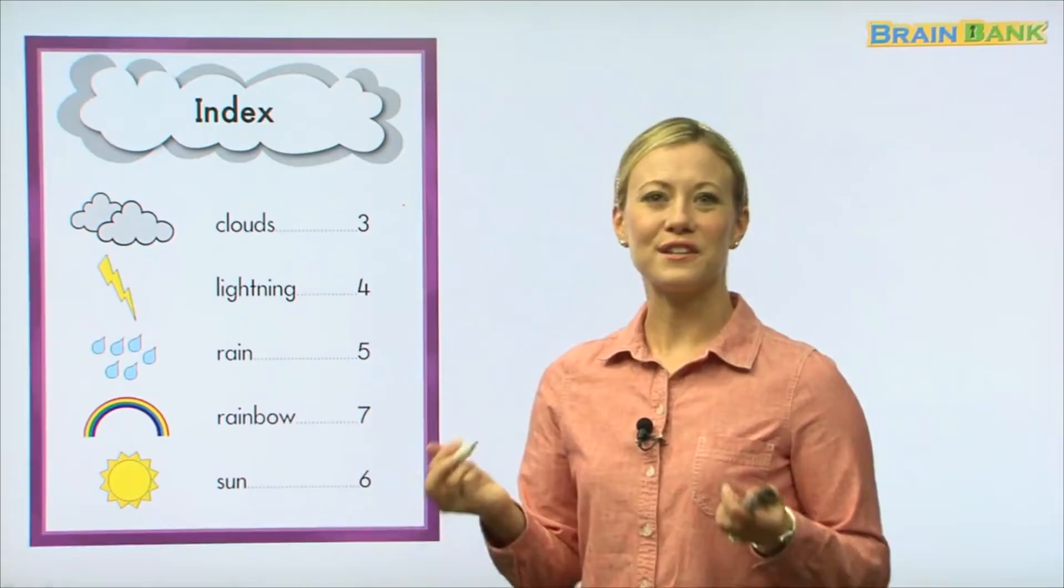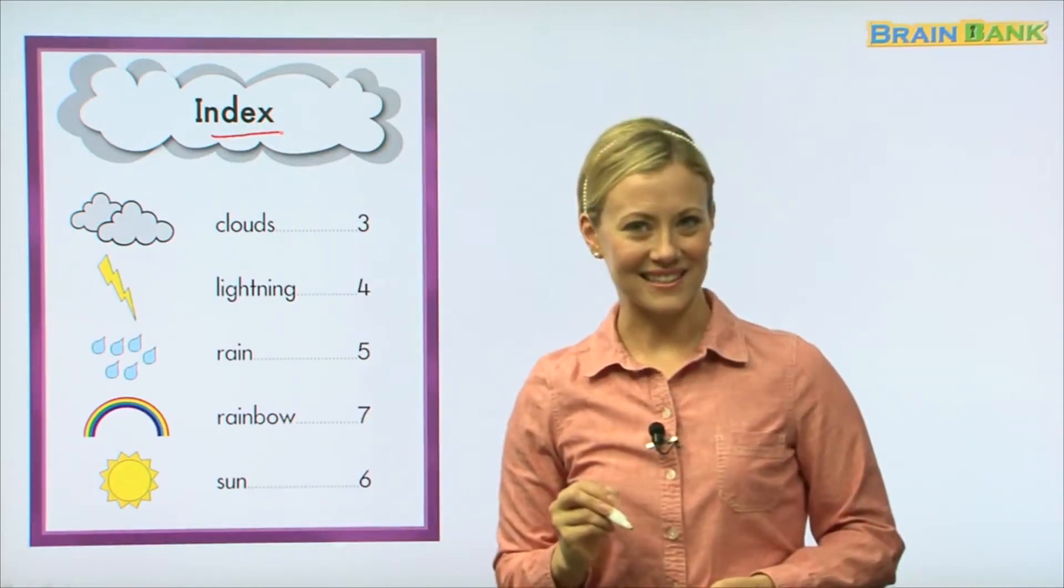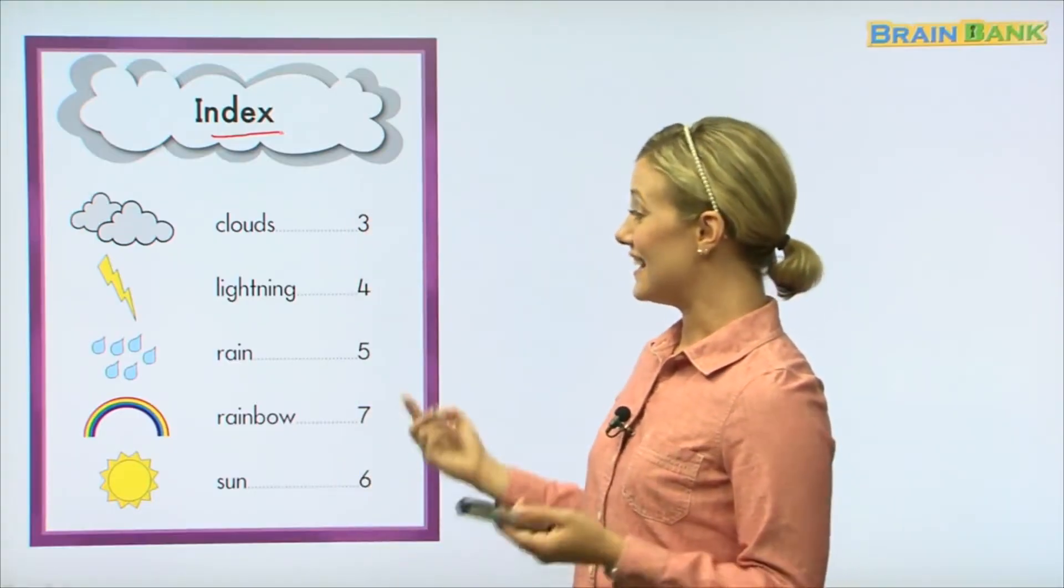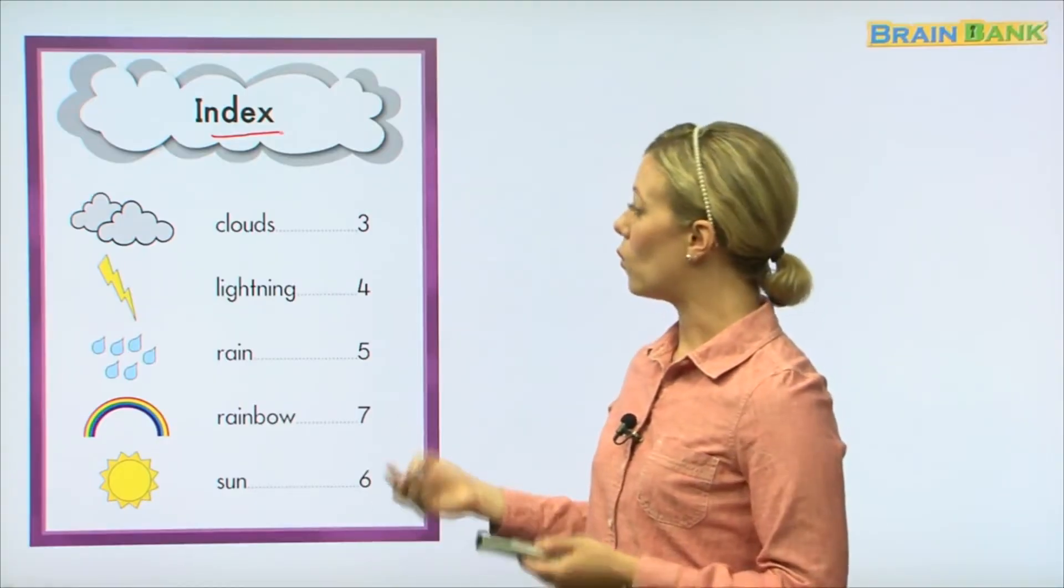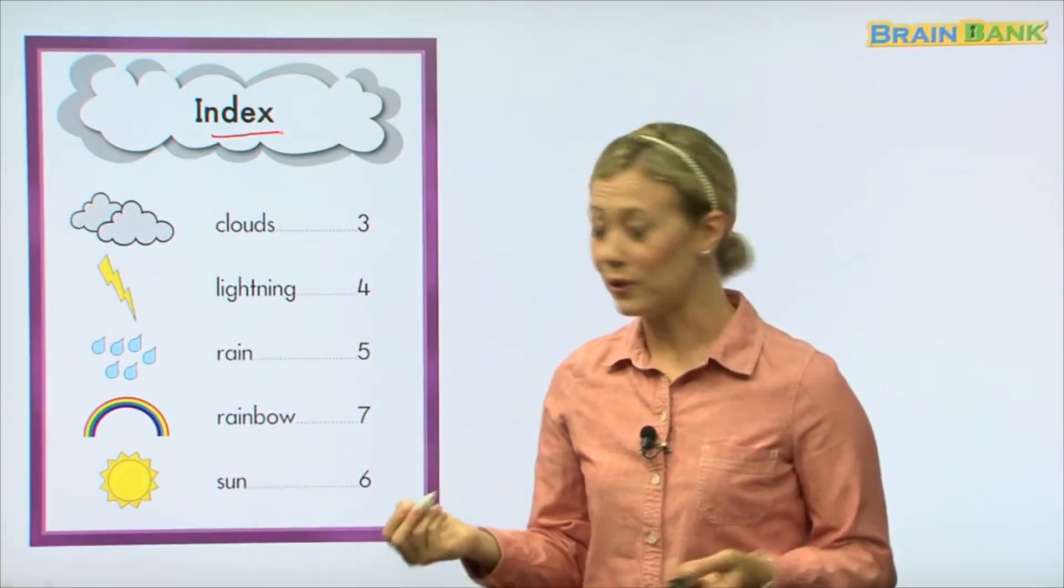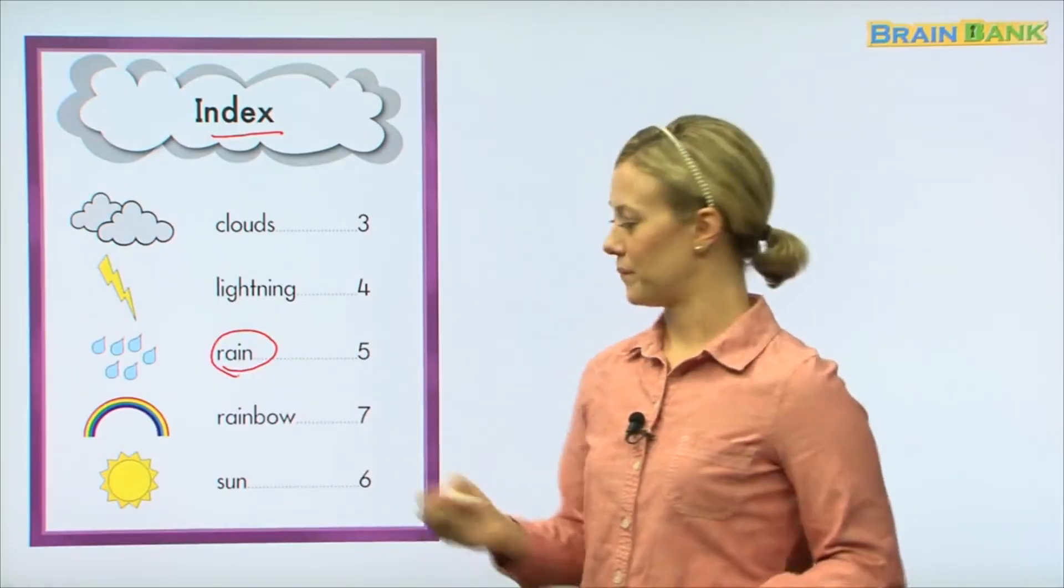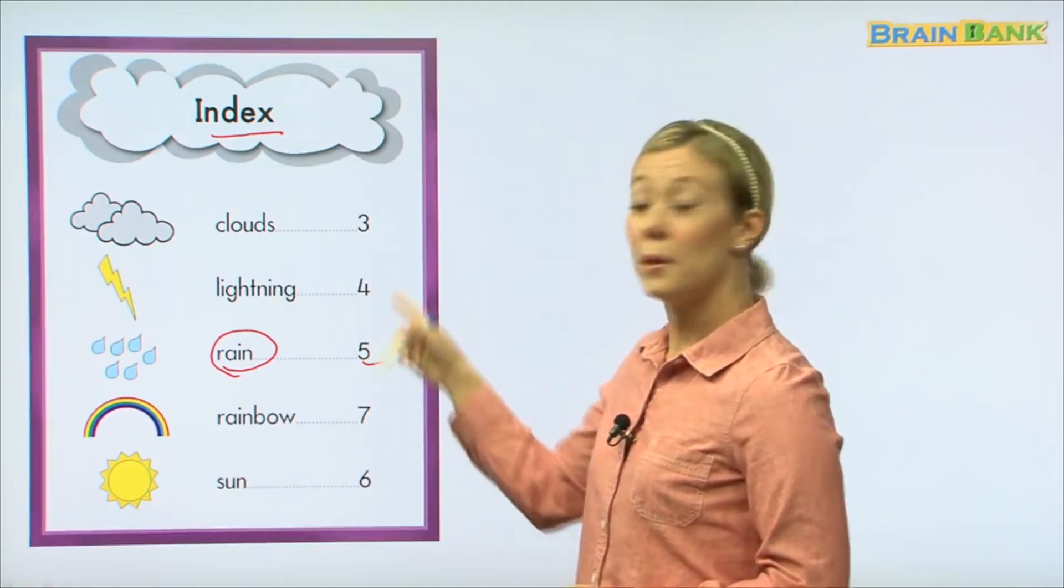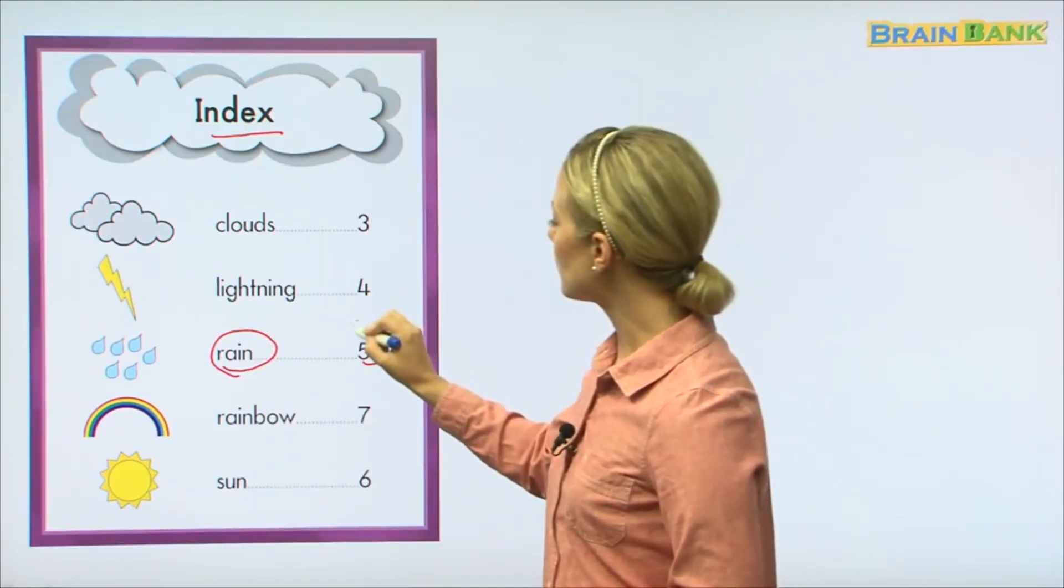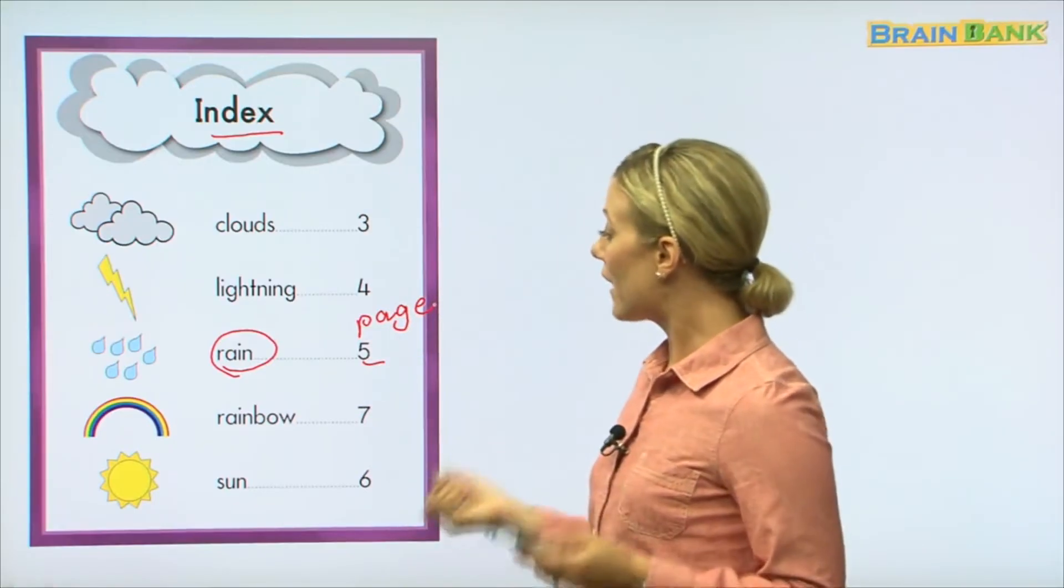But at the end of every story we can usually find this. Who can read that? Yes, that is called an index. This is called an index. In an index we can figure out where we go in the book to find these different things. So for example, if I want to read and see pictures of rain, where should I go? Ah, these are page numbers. So if I want to see rain and read about rain in this book, I should go to page five.